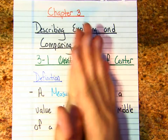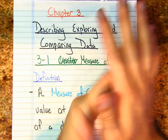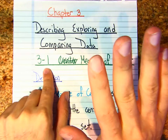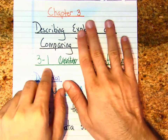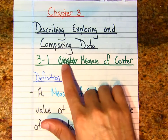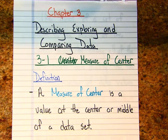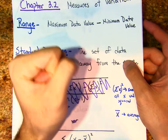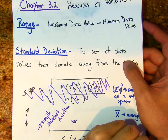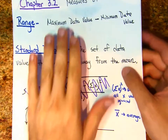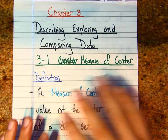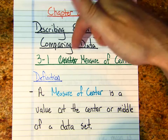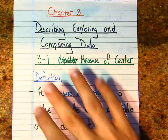All right, welcome everybody. Let's begin chapter 3. Section 3.1 is going to fly by really fast — it's just basic info, stuff you've probably seen in the past. It'll be a quick refresher. But when we get to 3.2, it's going to be some difficult stuff. We'll get to 3.2 very soon, but here at 3.1, we're going to knock it out really fast. So 3.1 is about describing, exploring, and comparing data values.